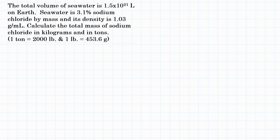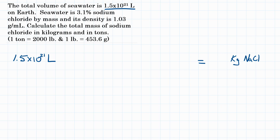The problem says the total volume of seawater on Earth is 1.5 times 10 to the 21st liters. Seawater is 3.1% sodium chloride or salt by mass, and its density is 1.03 grams per milliliter. We need to calculate the total mass of sodium chloride in kilograms and in tons. This is a dimensional analysis problem — a semi-complicated one — where we start with 1.5 times 10 to the 21st liters and convert to the total mass of NaCl in the seawater.